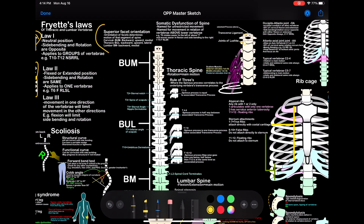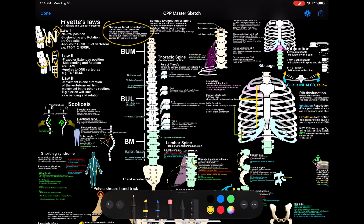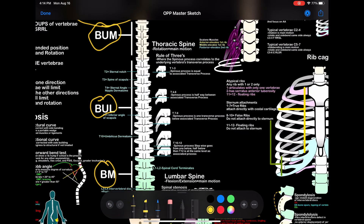Superior facet orientation — the superior facet influences how the spine moves. A little memory trick here: bum, bull, bum. The facet orientations: backward, upward, medial. Backward, upward, lateral. Backward, medial.